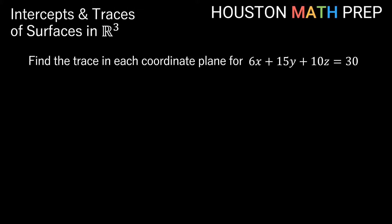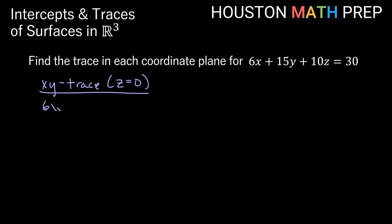We'll take you through a couple examples of finding traces in the coordinate planes for different surfaces. Here we want to find the trace in each coordinate plane for the plane 6x plus 15y plus 10z is equal to 30. Our xy-trace is when the variable not named — z — is equal to 0. Setting z equal to 0 gives us 6x plus 15y equals 30, which simplifies to 2x plus 5y is equal to 10. This is a linear equation in x and y, so this trace is a line.